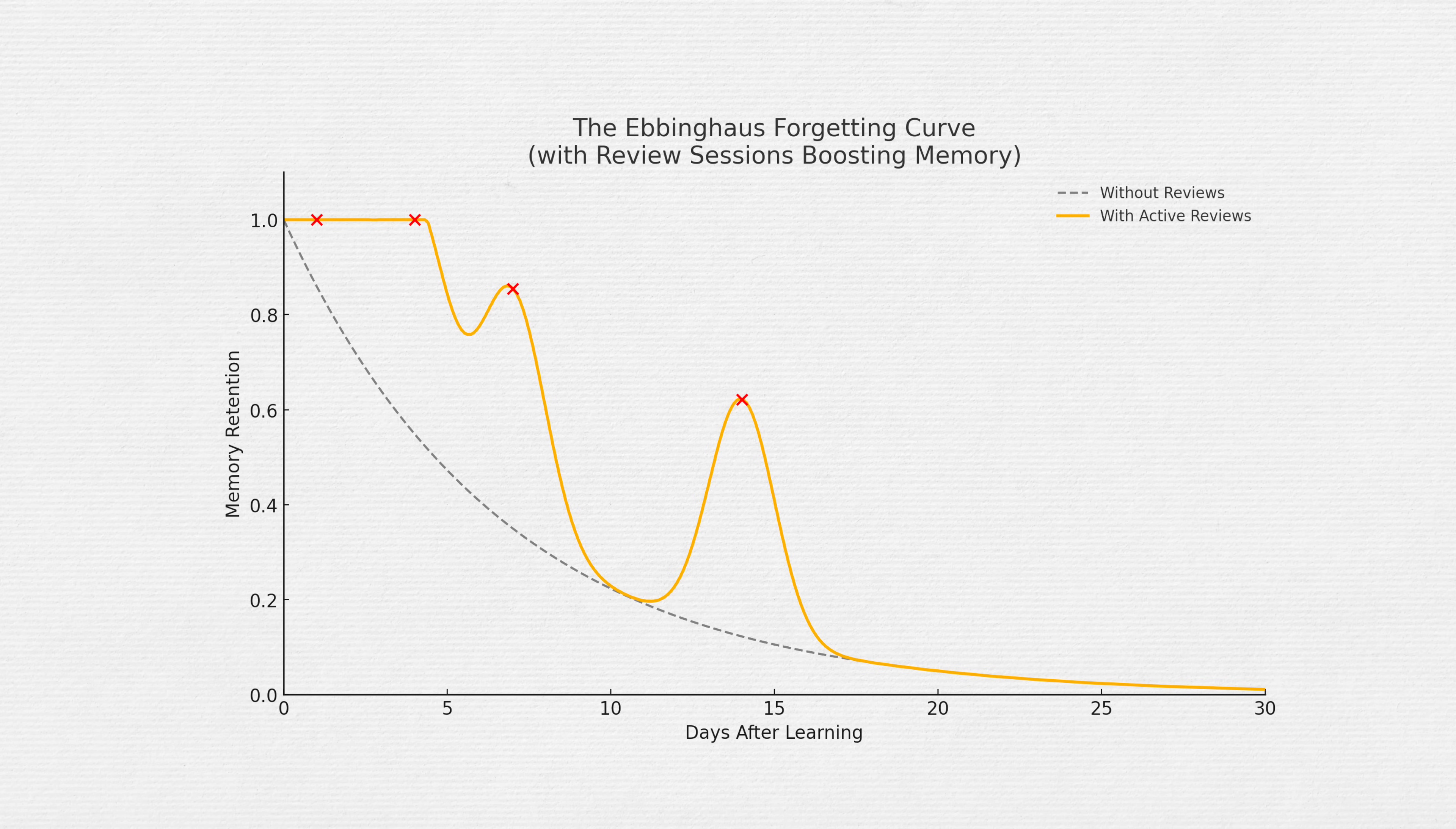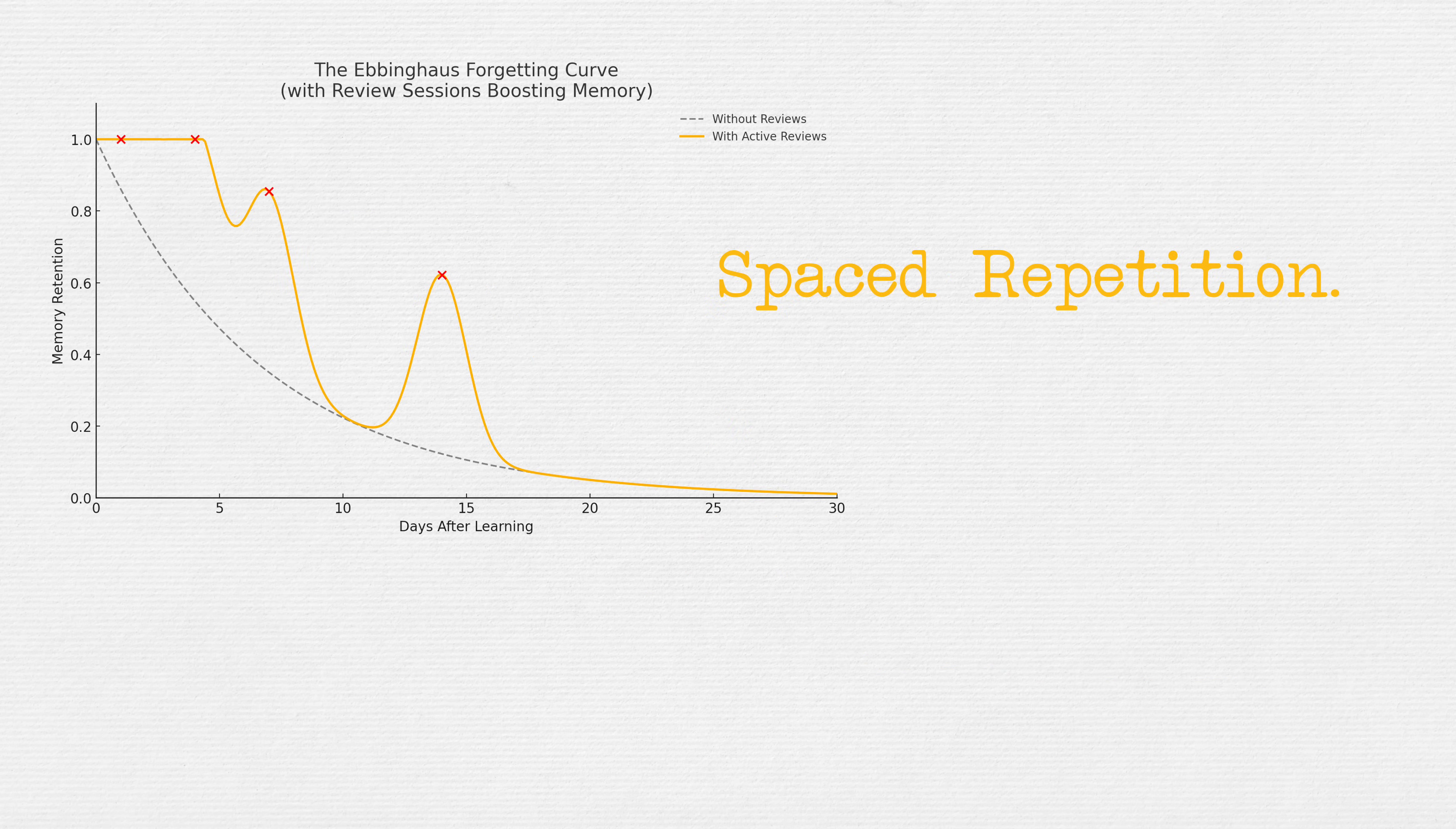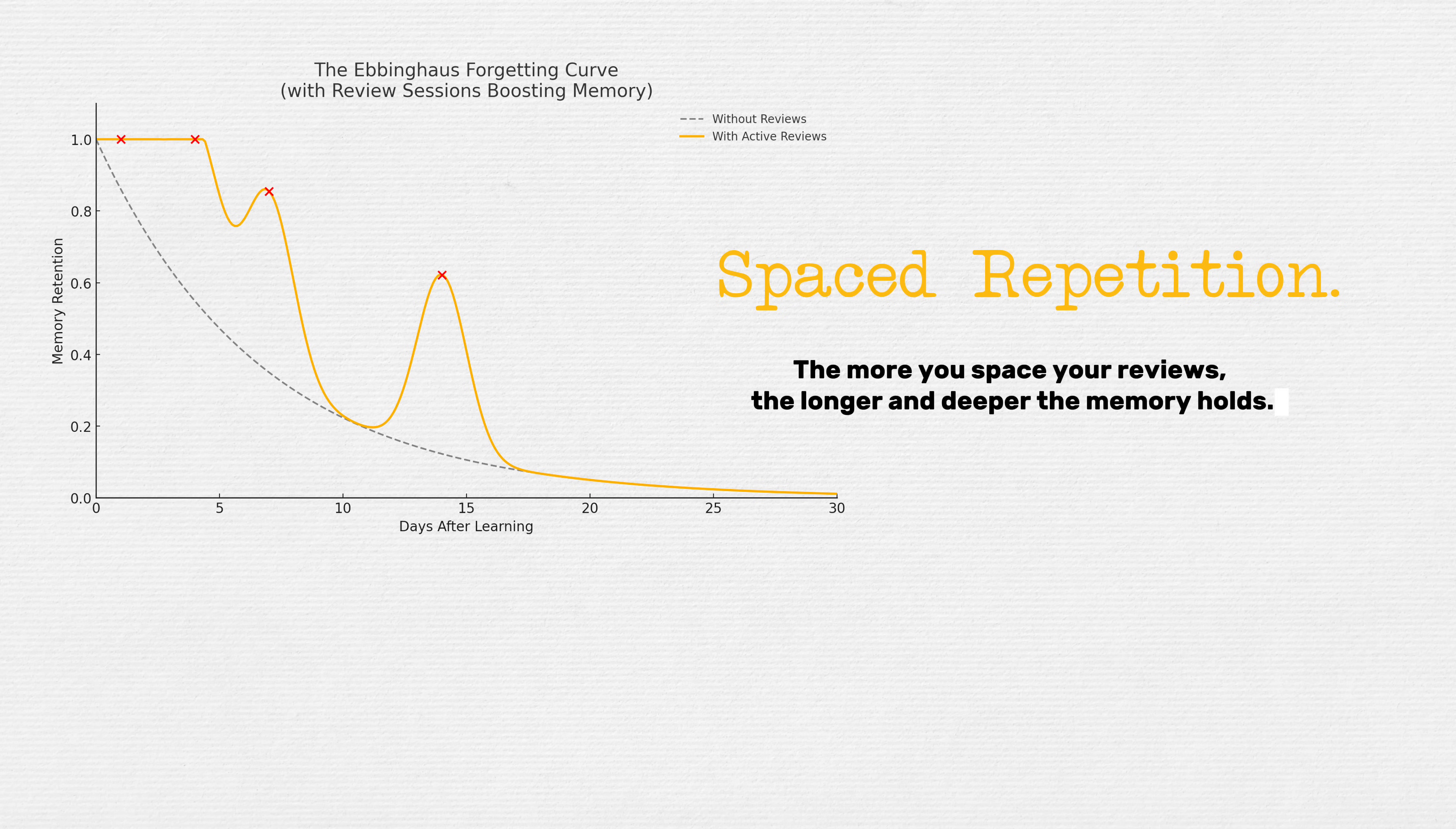You've learned how to retrieve information with active recall. That's where learning starts. But to make that learning stick, to turn short-term wins into long-term retention, you need the second pillar, spaced repetition. Think of it like compound interest, but for memory. The more you space your reviews, the longer and deeper the memory holds.